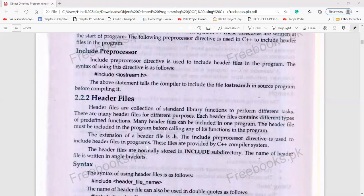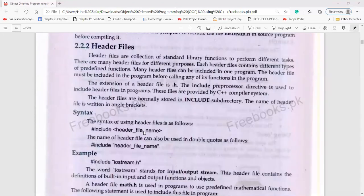The extension of header file is .h. The include preprocessor directive is used to include header files in the program. These files are provided by C++ compiler system. Now we have the syntax of include and header file name.